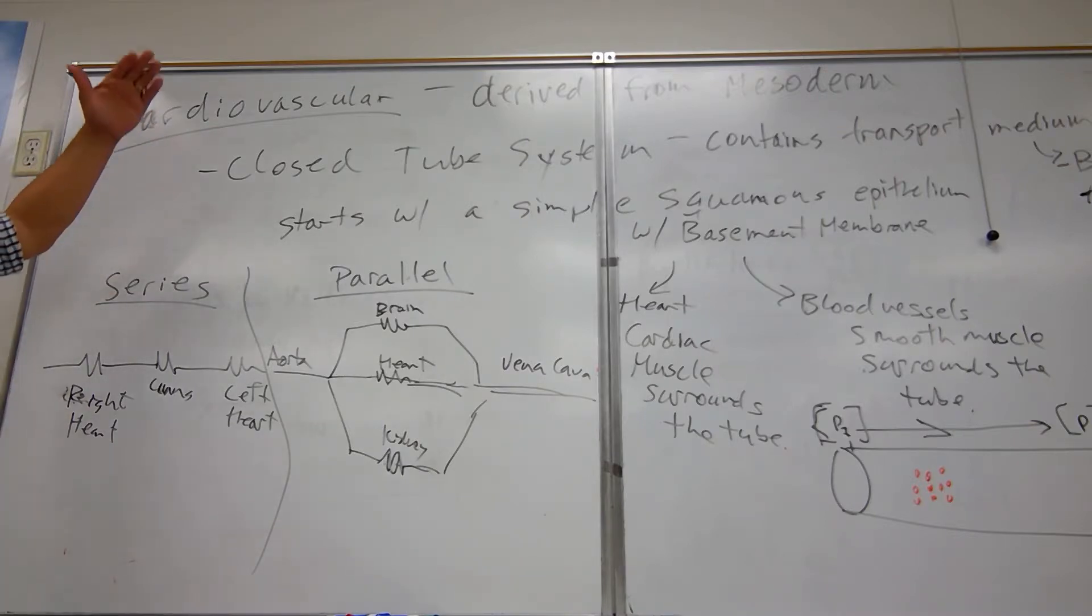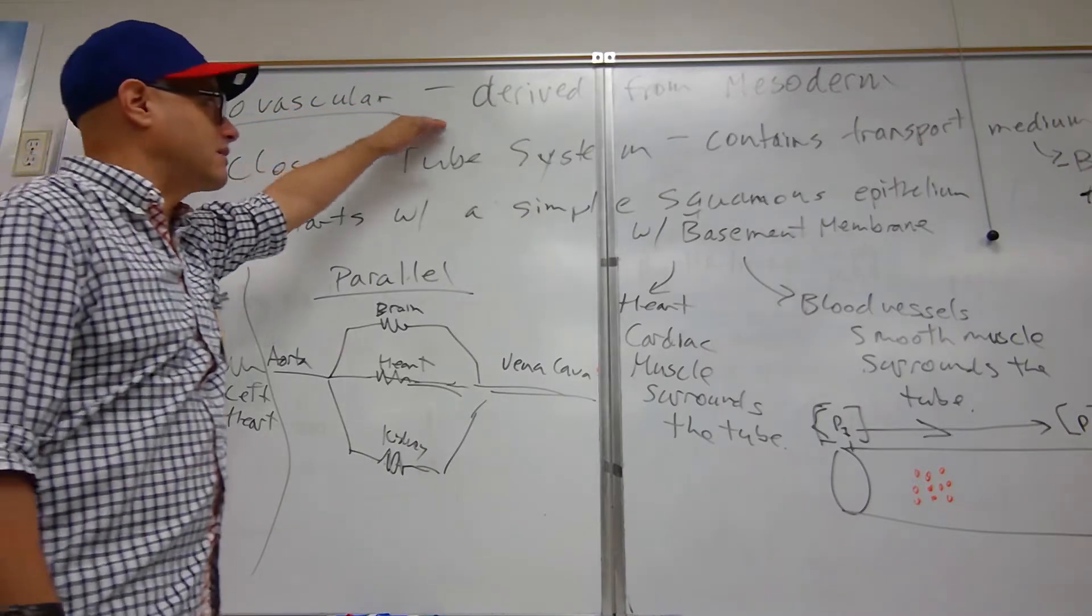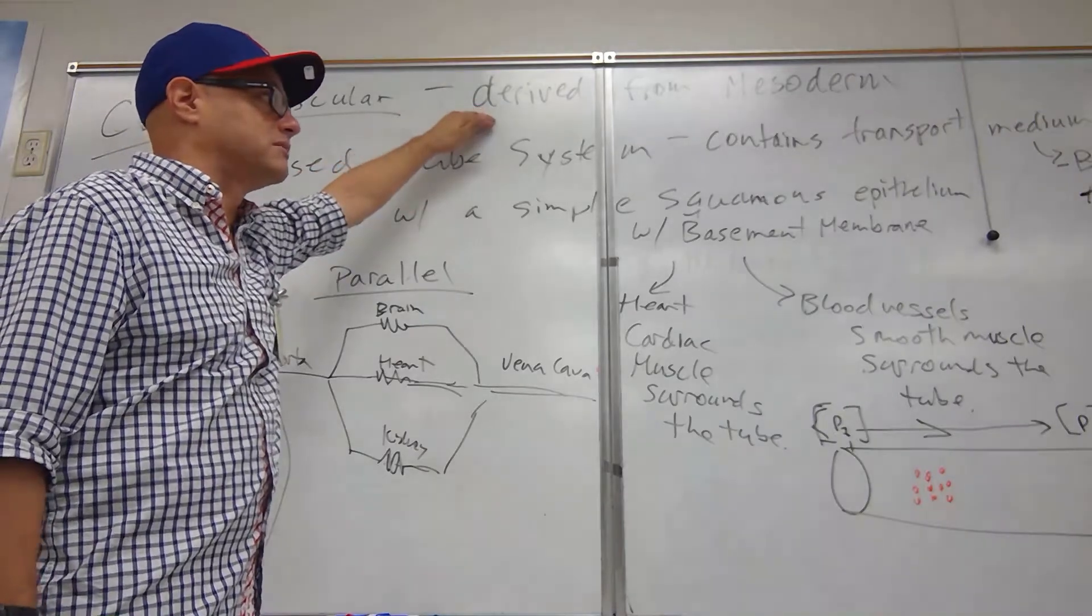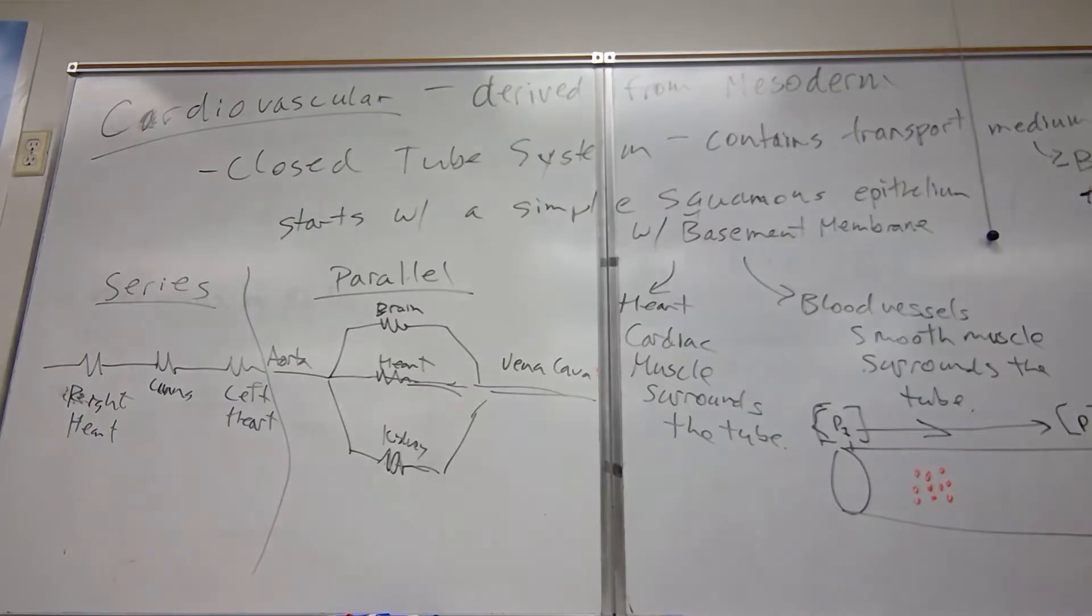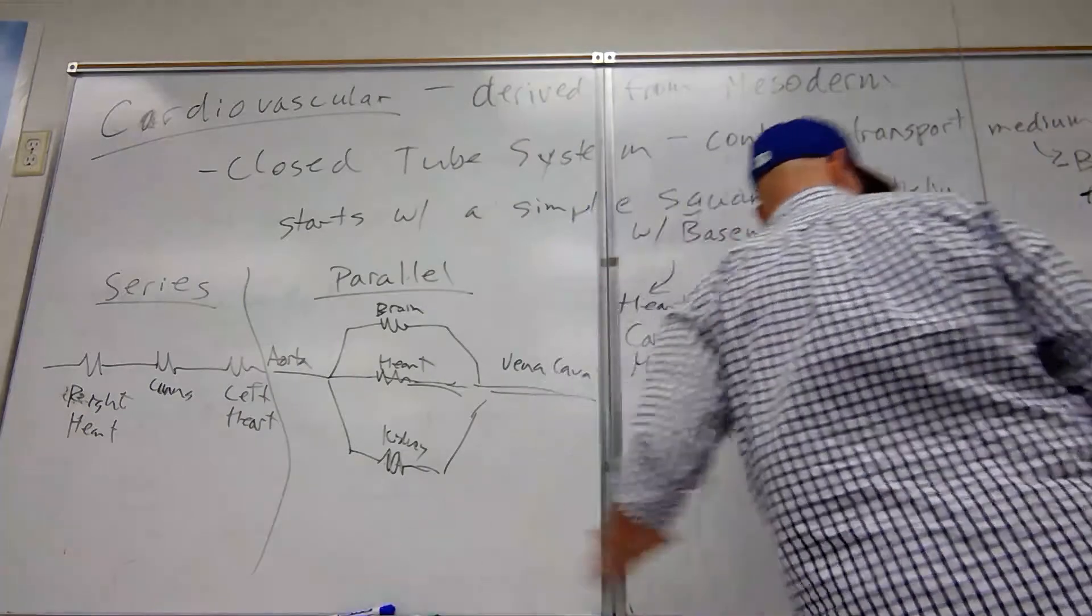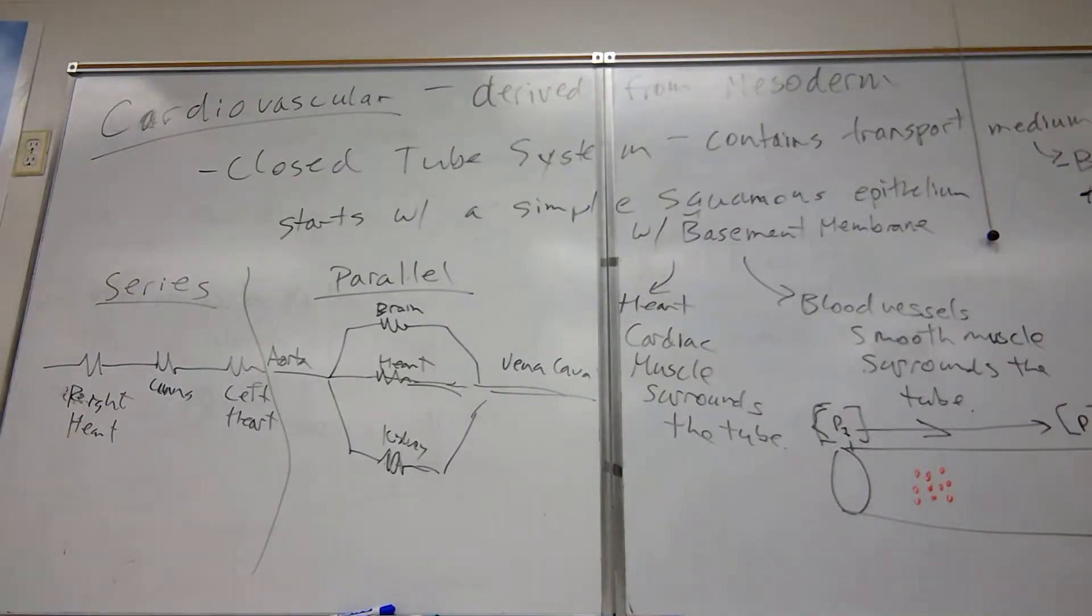And so this cardiovascular system derived from mesoderm, guys, that cardiovascular system derived from mesoderm is everything but these cells. Because these cells, and I don't know where my red is somewhere, I know I have a red somewhere. Yes, there it is. I put it up on the board. So I'm going to rewrite these cells here. I'm going to rewrite those cells because those cells are, in fact, different.